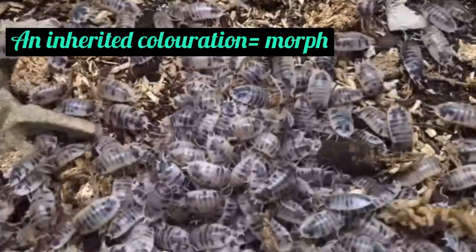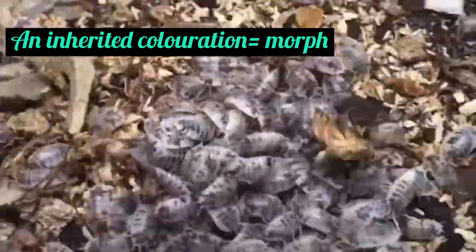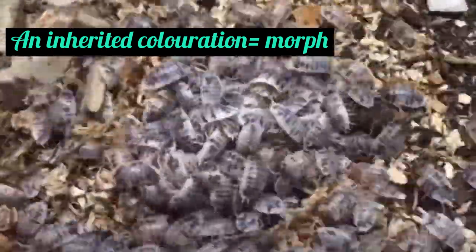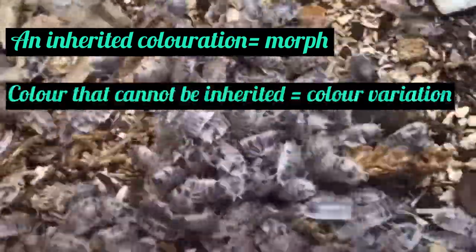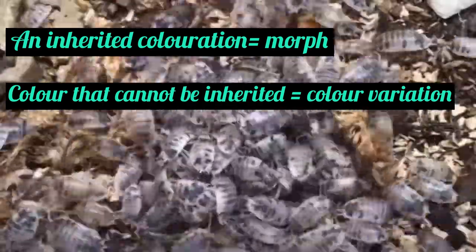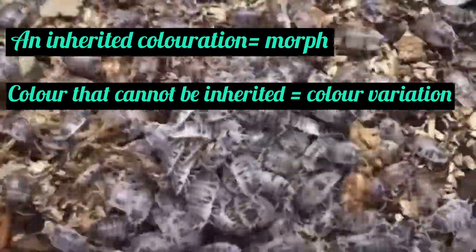If these colors and patterns can be isolated and eventually passed down to the majority of their offspring, they can be classed as a true morph. But sometimes an isopod will show up with a random color or pattern that cannot genetically be passed down to their offspring. These are not considered a morph but simply a color variation.